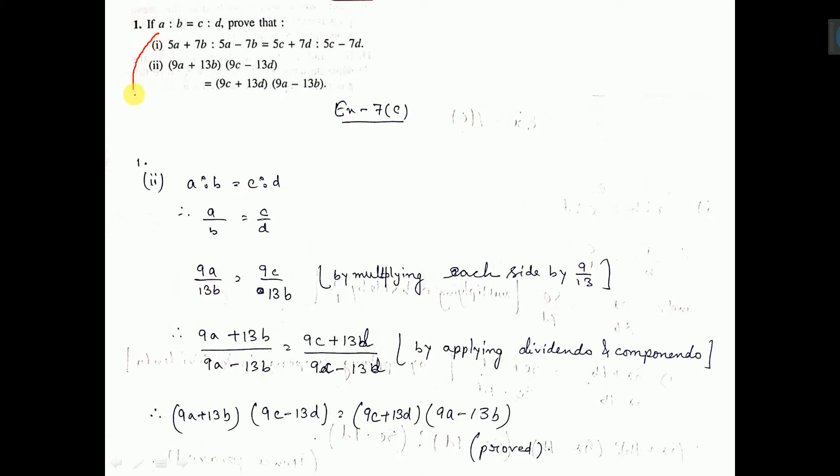So, a is to b equal to c is to d, it is given. So, we write it as a by b is equal to c by d. Both sides multiply 9 by 13, 9 by 13. So, it will be this one.